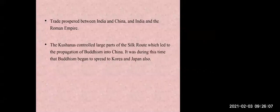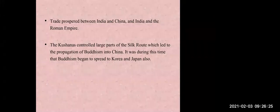Trade prospered between India and China, and between India and the Roman Empire. The Kushanas controlled large parts of the Silk Route, which led to the propagation of Buddhism into China. The Silk Route was a trade route connecting India and China, and through this route they also spread Buddhism into China.